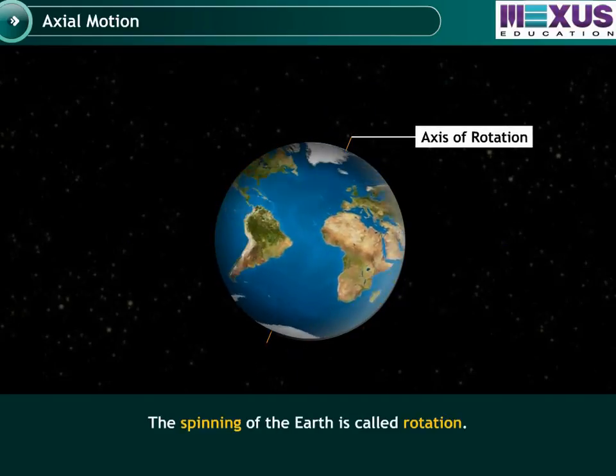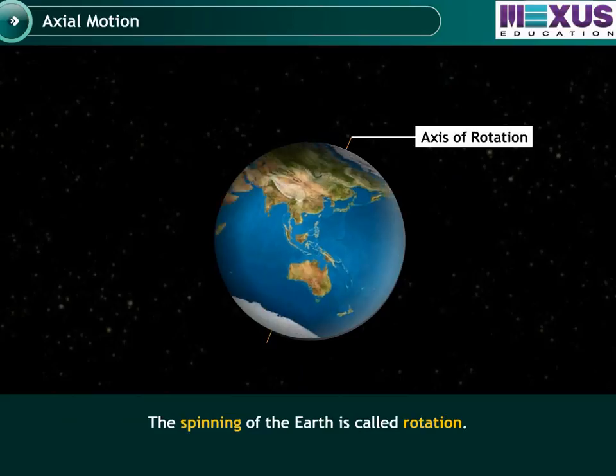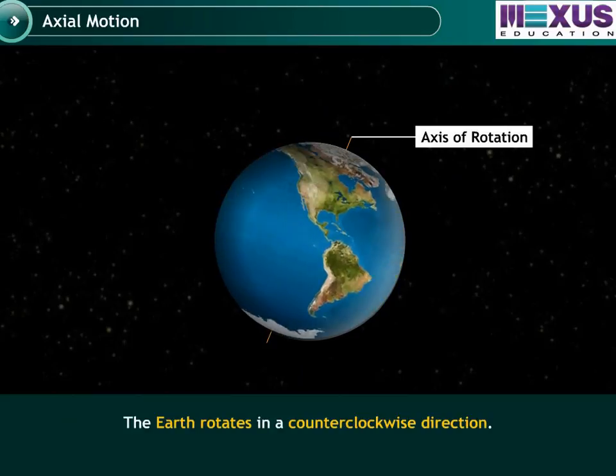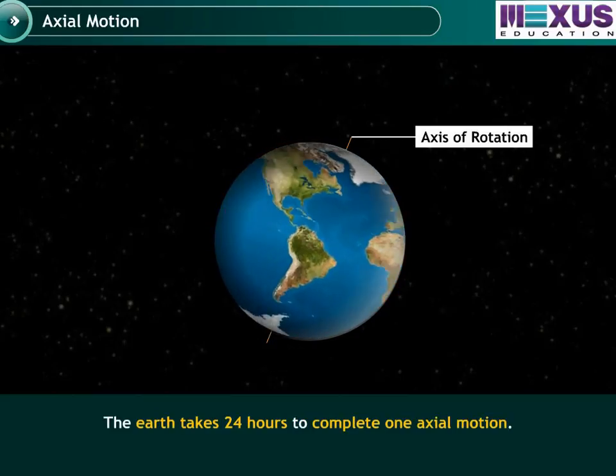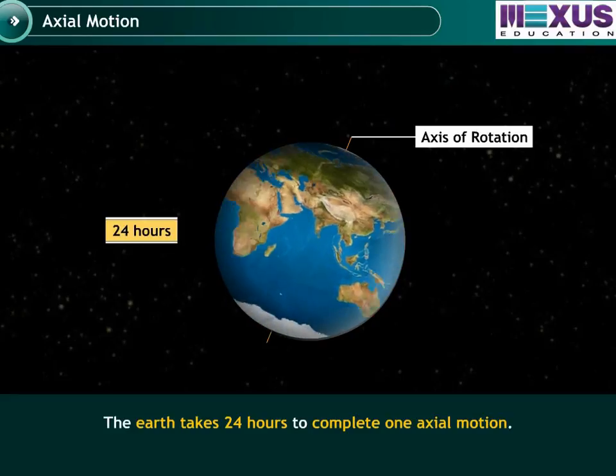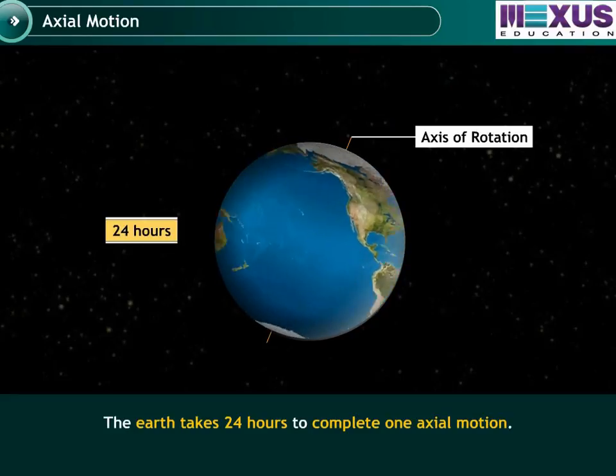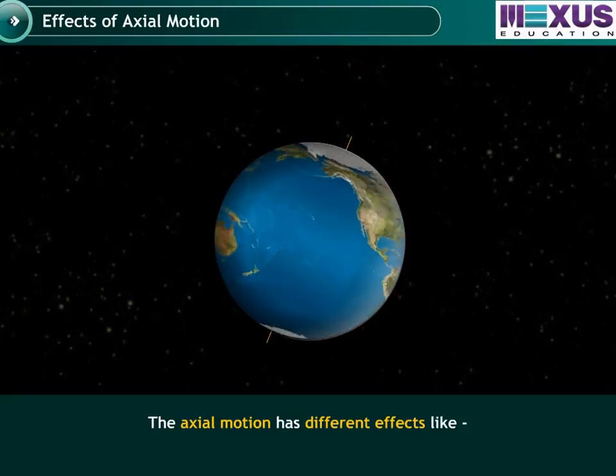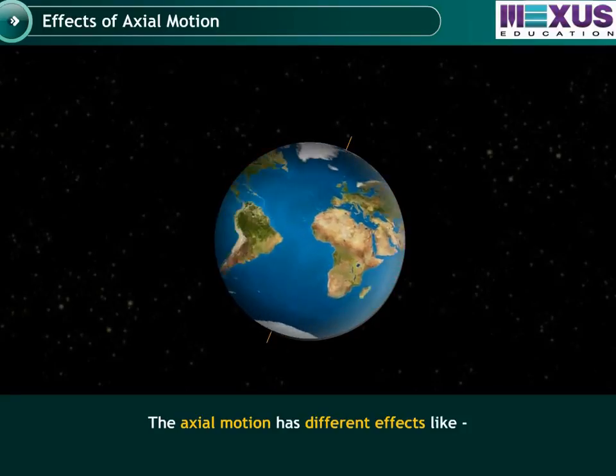The spinning motion of the Earth is called rotation. The Earth rotates in a counterclockwise direction. It takes 24 hours for the Earth to complete one axial motion. The axial motion has different effects.